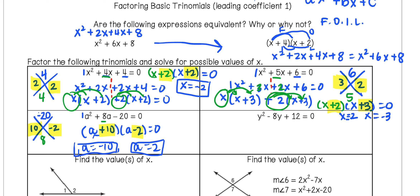The full grouping method works for any quadratic. But when the leading coefficient is 1, we can skip the step of grouping into two parts and go straight to writing the binomials. We will need to return to the grouping method later for examples without a leading coefficient of 1. For now, use the shortcut to save time. Go ahead and try the last one, and press play when you're ready.